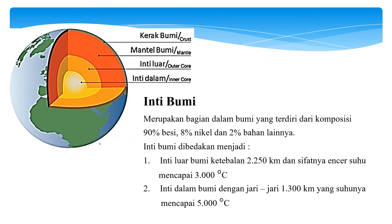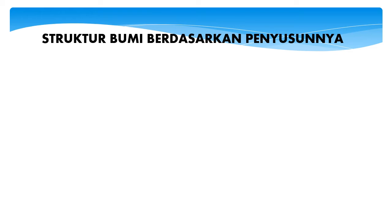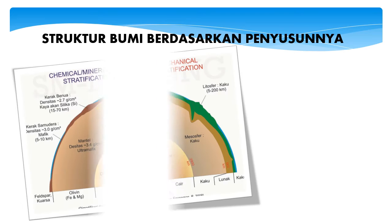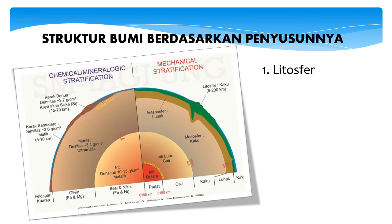Struktur bumi berdasarkan penyusunnya dibagi menjadi tiga. Yang pertama yaitu litosfer. Litosfer adalah lapisan paling luar bumi, terdiri atas kerak bumi dan bagian atas selubung. Litosfer memiliki kemampuan menahan beban permukaan, misalnya gunung api. Litosfer bersifat kaku dan bersuhu dingin.